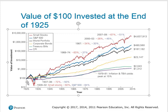You can do the calculation: the present value is $100, the time frame is 88 years, and then you just pick the end values. If you look at small stocks, they would have grown to $4.6 million. The rate of return since 1925 is roughly 12.99% — almost 13% — which is what small stocks have earned.